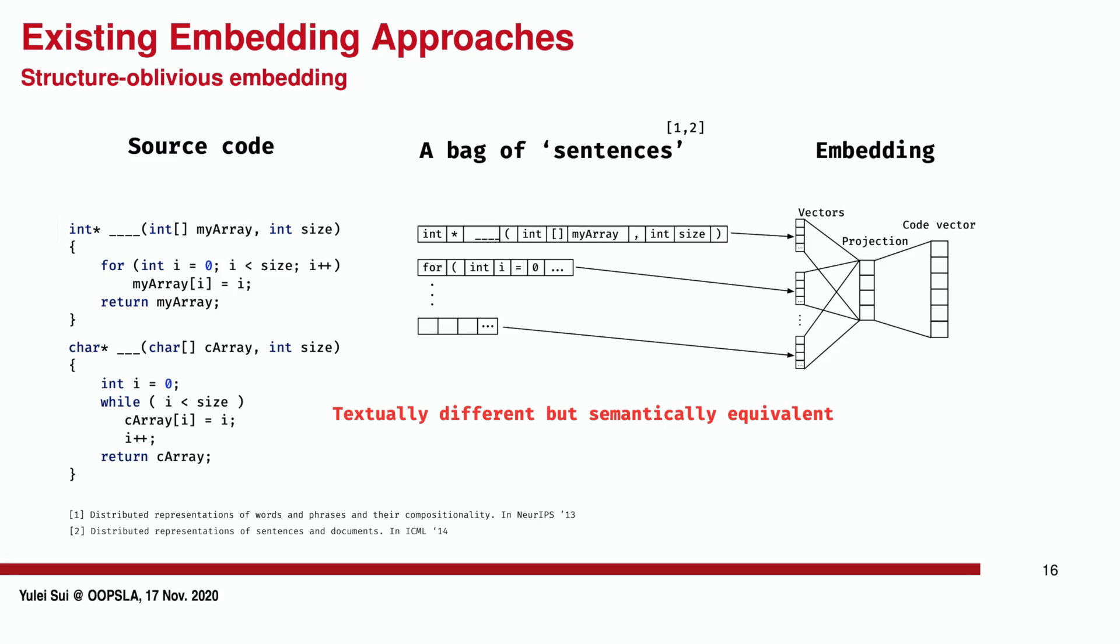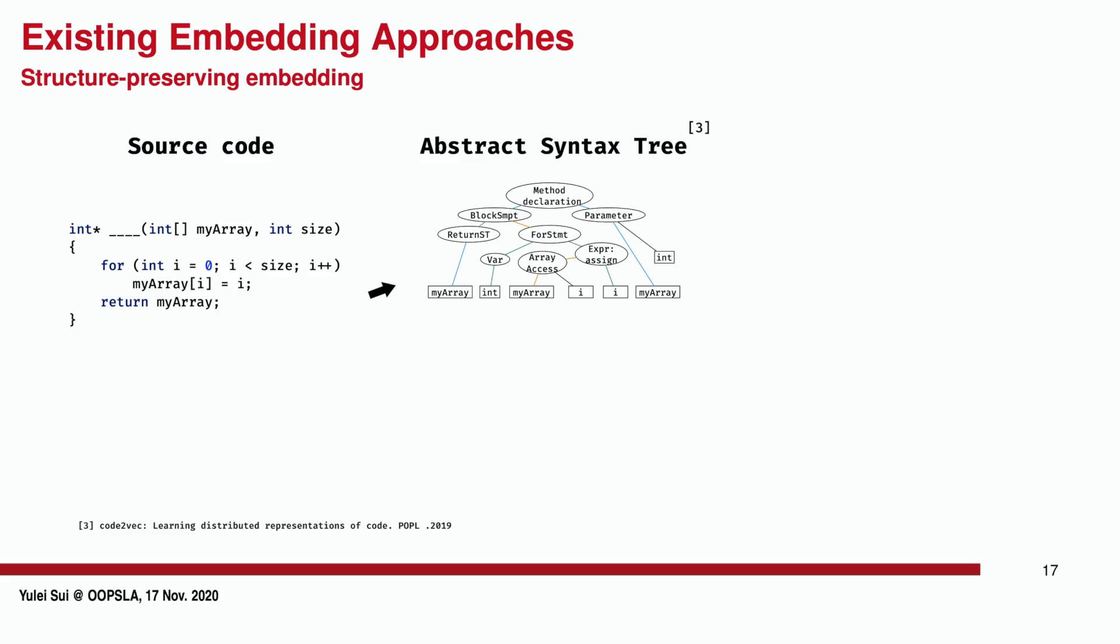The resulting vectors are close to one another in the embedding space if two code fragments are textually similar. However, source code is not simple text. Two code snippets can be textually different but semantically equivalent, as the two code examples we have seen before. In order to preserve richer code semantic, recent approaches extract structural information based on abstract syntax trees or flow graphs of a program.